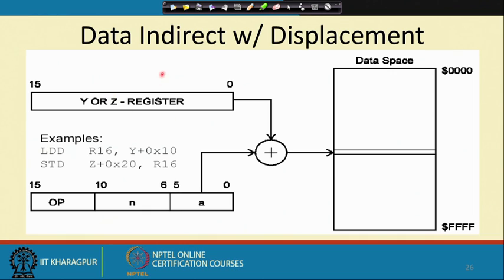You also have data indirect with displacement — LDD R16, Y+10. The Y register plus the constant value 10 coded in the instruction will be added to act as the offset where the value should be read. If the Y location content is 1000, with 10 added it becomes 1010 and then that location content is accessed. Similarly, STD Z+0x20, R16 stores R16 to the indirect register plus the offset.